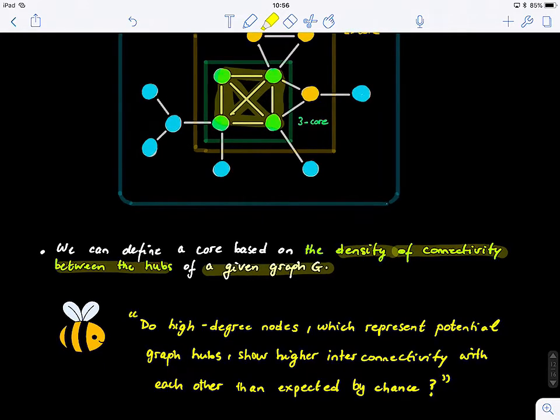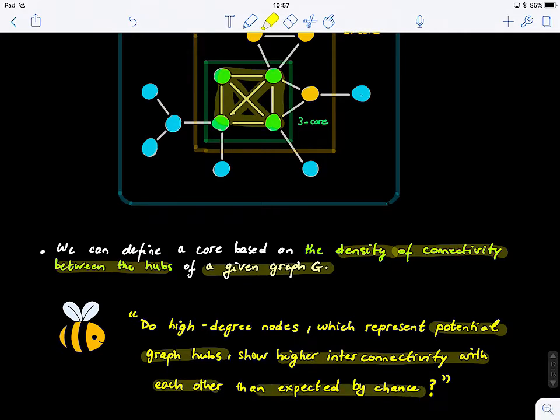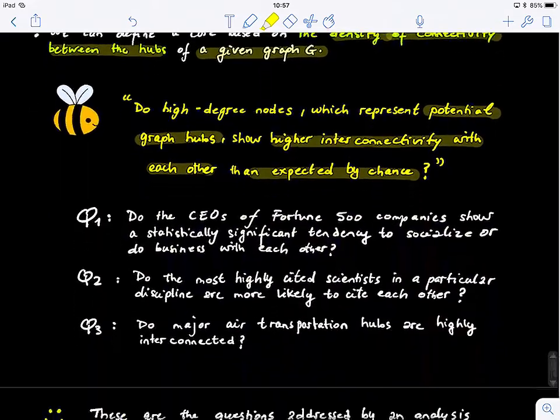So let's look at this question together. Do high-degree nodes, which represent potential graph hubs, show higher interconnectivity with each other than expected by chance? So you might have very high degree nodes, like central hub nodes, in your graph. But would you expect that these nodes to be also highly interconnected, these hub central nodes? Maybe we can translate this abstract question to a real-world based question. So let's look at these three questions.